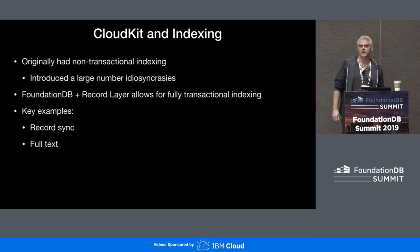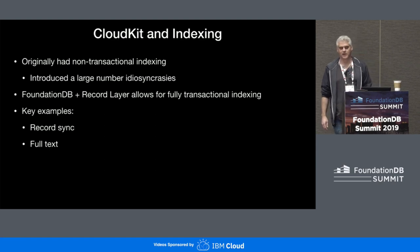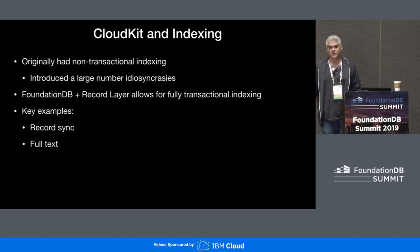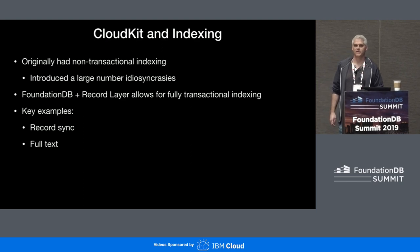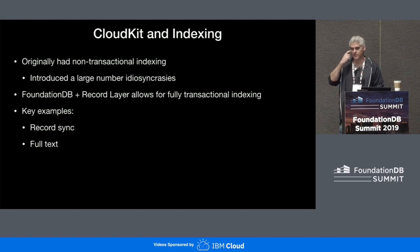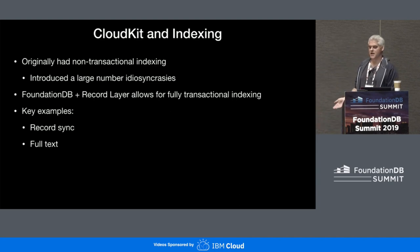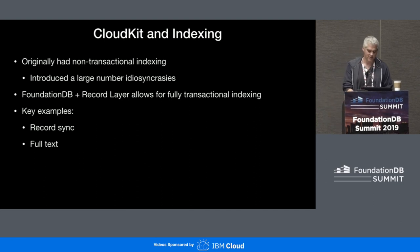Next I'll dive into how CloudKit uses FoundationDB and RecordLayer for indexing. Originally, CloudKit relied on mostly non-transactional indexing — external indexing services. As most of you probably know, by having an external non-transactional system, you get lots of strange idiosyncrasies when handling requests against these indexes. FoundationDB gives us transactions, and transactions give us fully consistent indexes. I'm going to dive into a couple of the key indexes we utilize today.